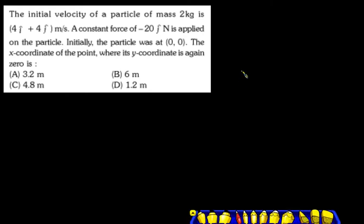The initial velocity of a particle of mass 2 kg is 4i + 4j m/s. A constant force of -20j N is applied on the particle. Initially, the particle was at the origin. Find the x-coordinate of the particle where the y-coordinate is again zero.